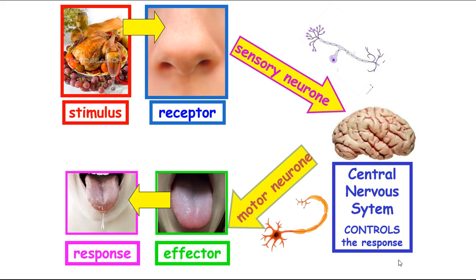Regardless of what our stimulus is, it will follow this basic pathway: stimulus detected by a receptor, brought to the central nervous system — the processing center — by a sensory neuron, processed with the help of those inter- or relay neurons, then a decision or instructions sent out via a motor neuron to an effector, which will carry out a response.